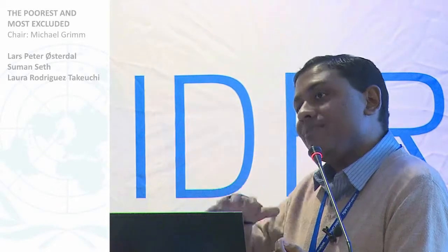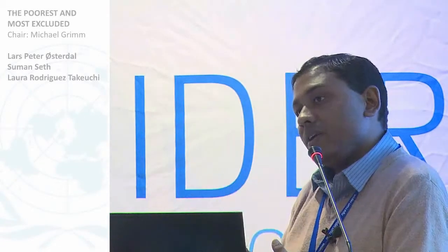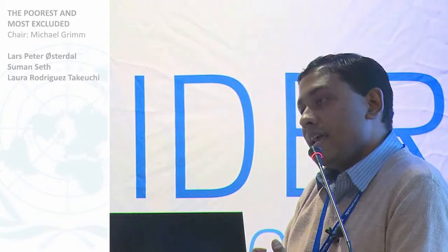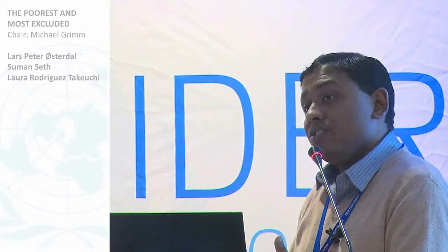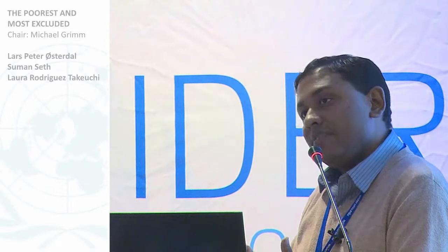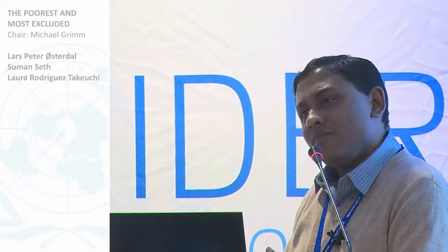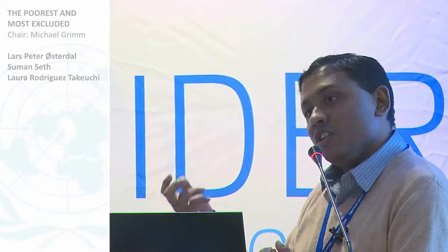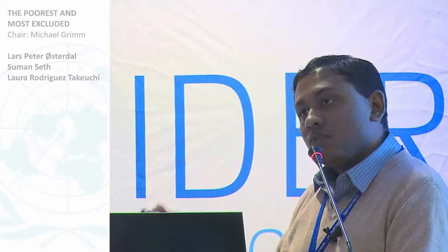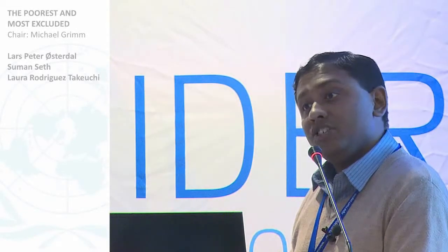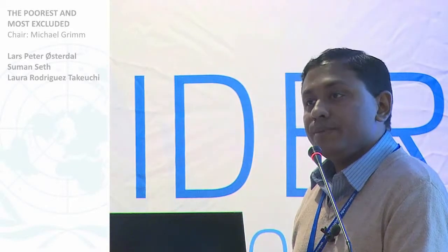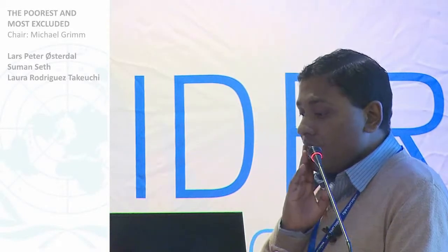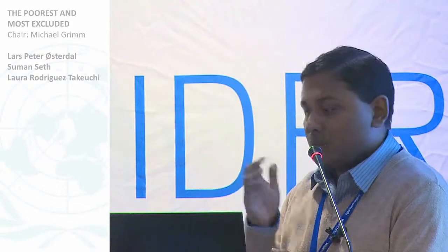Here also we have three pillars: standard of living, education, and health. As Professor Tony Atkinson argues, in situations where you really do not know how to decide, choose the dimensions in such a way that they have equal importance. So dimensions were chosen with equal importance as was done in the HDI, and the indicators within each dimension were just equally weighted.